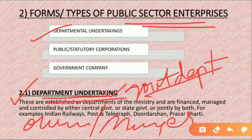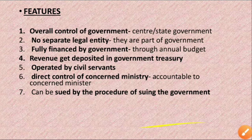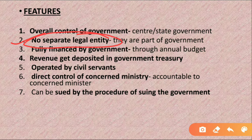Departmental undertakings are government departments like the railway department, defense department, and postal department. They have no separate existence — they belong to and are managed by the government. No separate legal entity means the owner and management are the same. This is different from having a separate legal entity, where the owner and manager are different.